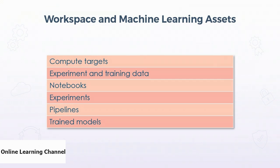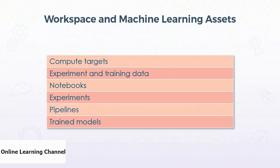For example, you can reference a dataset and then connect some transformation modules to convert it to a more usable format. Then you can connect some model training modules and add evaluation modules to score the trained model. Once all those modules are connected, you can run the pipeline and that run is tied to an experiment. Lastly, there are the models themselves — once you run an experiment and produce a trained model you like, you can register it and browse all the different models and their versions.